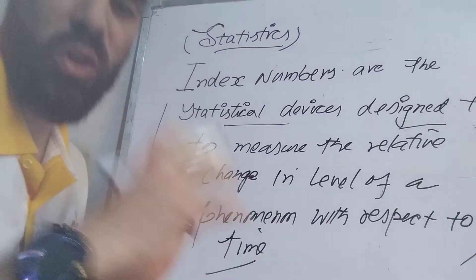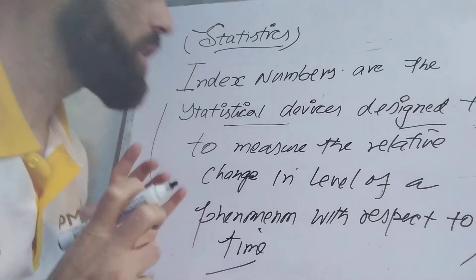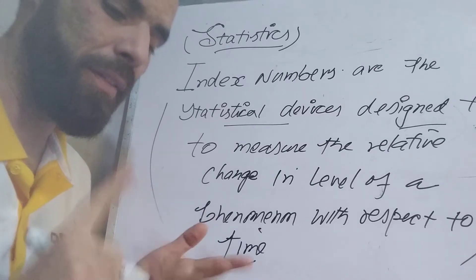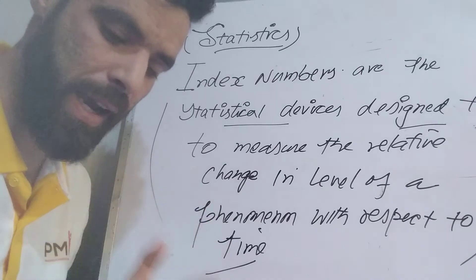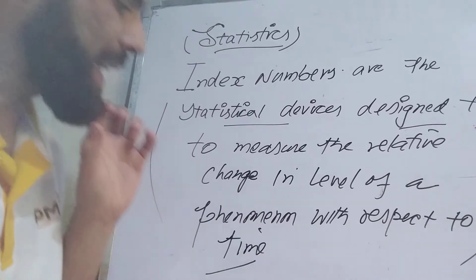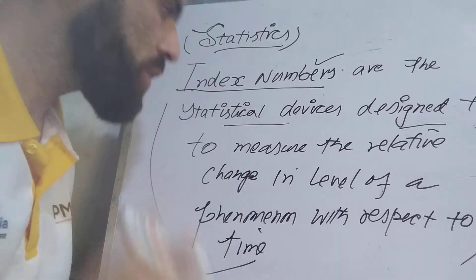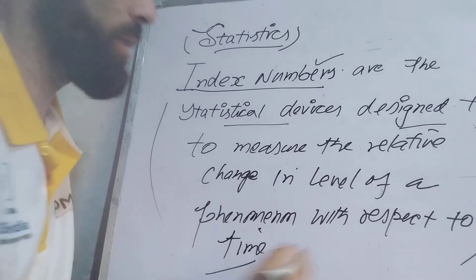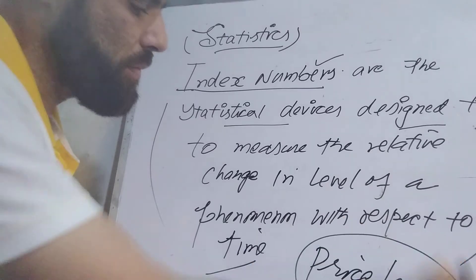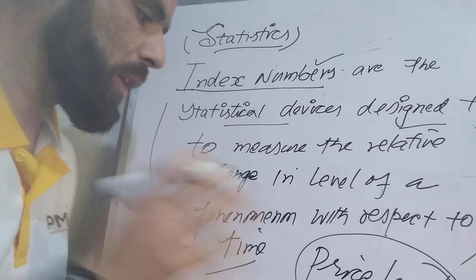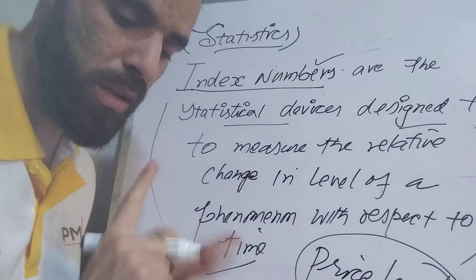If we go through this definition it seems unusual. In simpler language, these are statistical devices which measure changes over a period of time. These are the statistical tools being used to measure the price level in the economy. The questions arise: what is price level, why do we need to measure it, and how do index numbers measure it?